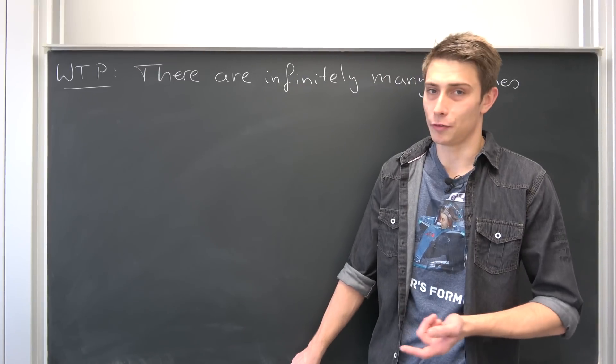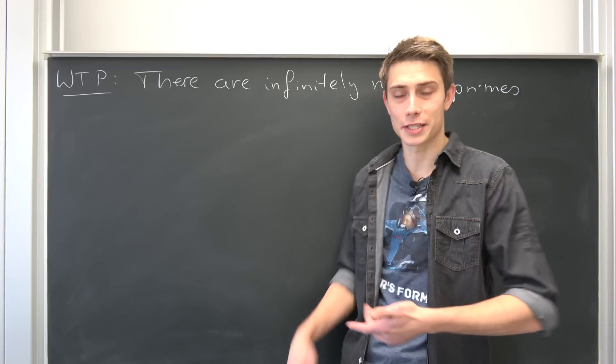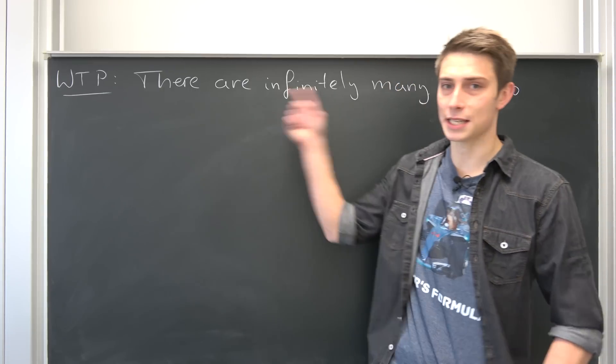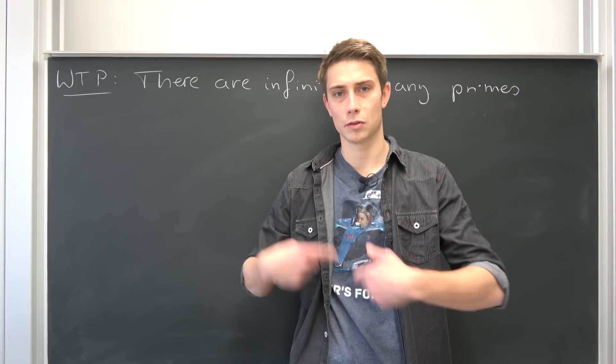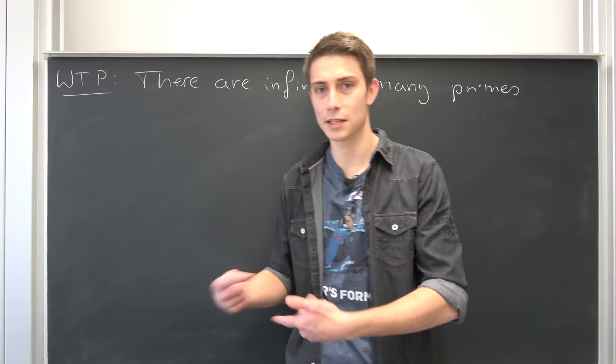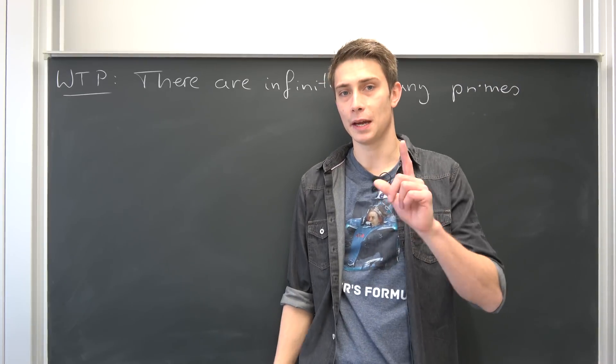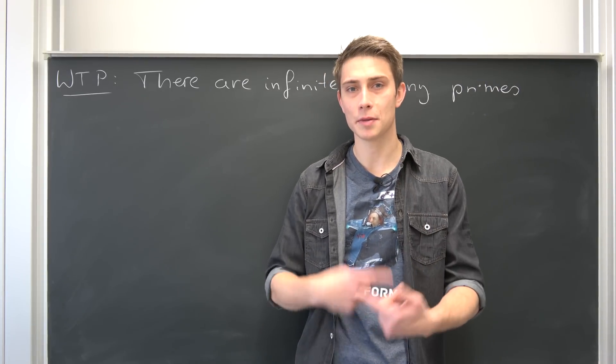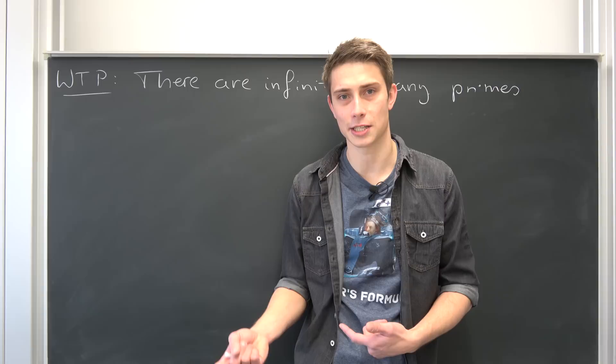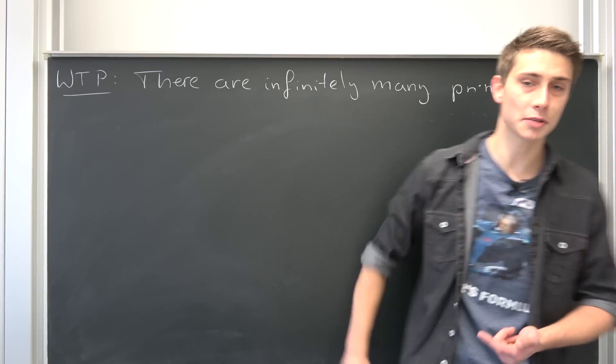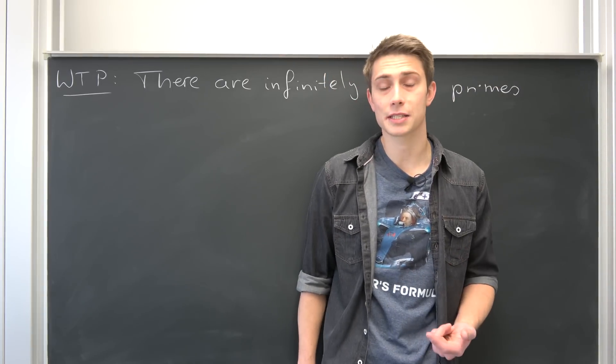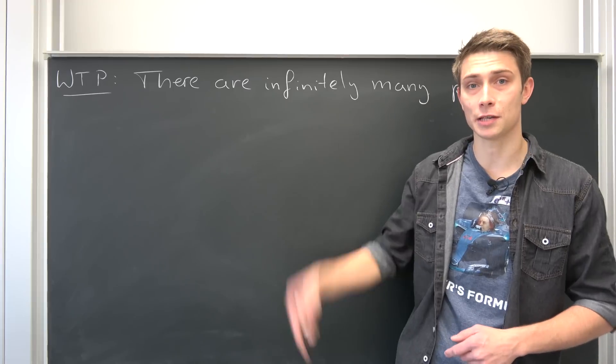For this we are just going to do a simple proof by contradiction. Namely, we are going to assume this statement to be false, so the negative statement: there are only finitely many primes. And then we are going to prove this statement to be wrong, this negated statement, in order for this original statement to be true. So let's go ahead and get started.